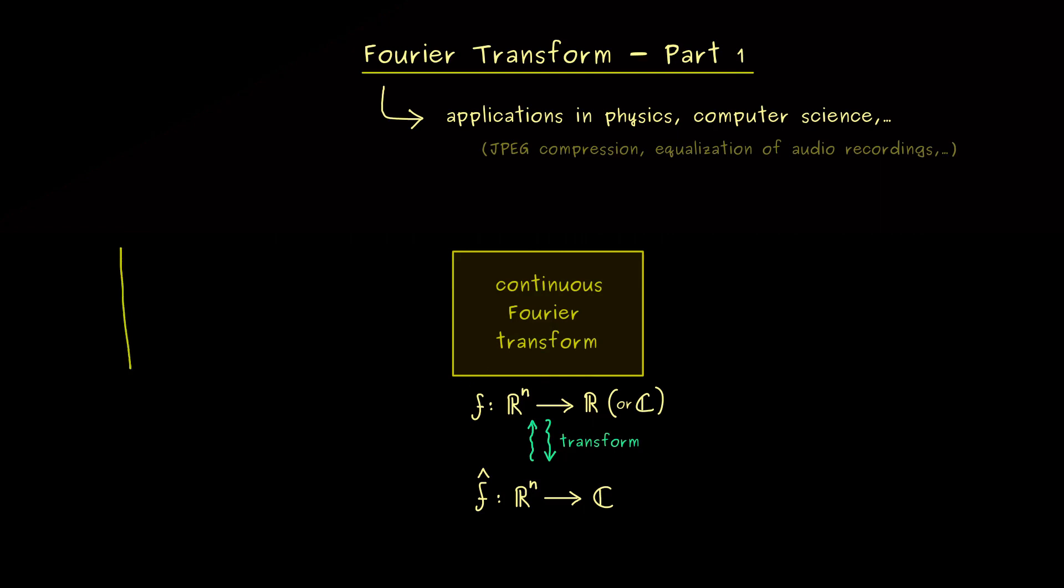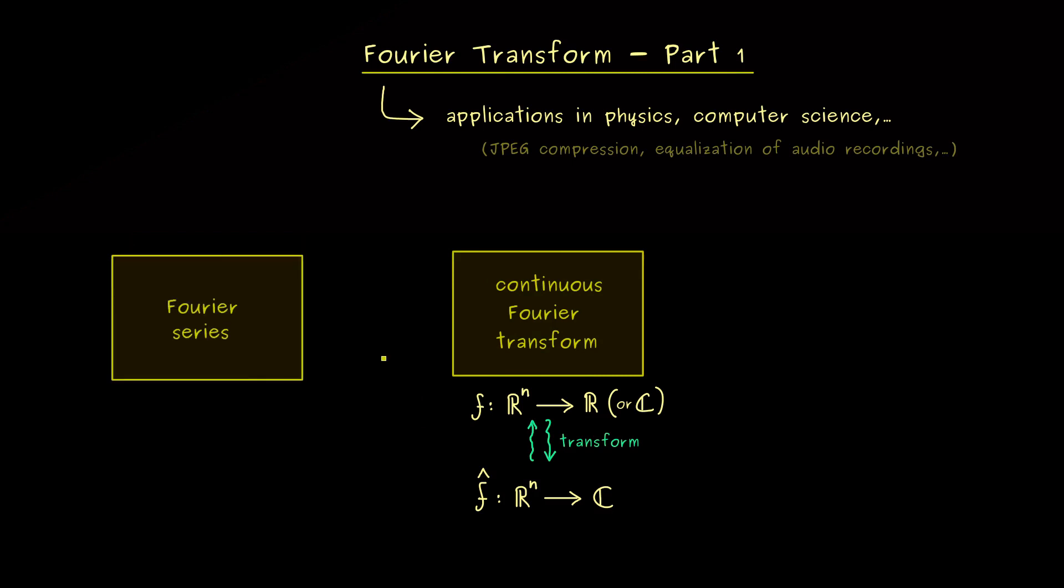Because first we will start with something a little bit more simple. This is something you could call the discrete Fourier transform, but this is usually not how the name is used. We usually speak of Fourier series. There we will also consider functions, but now they should be defined on the real number line, but still they will be real or complex valued. However, in contrast to the continuous case, this now should be a periodic function. This means the function will repeat itself again and again. So it's sufficient to know just a bounded interval for the domain. Hence it's also possible to consider functions defined on an interval a to b.